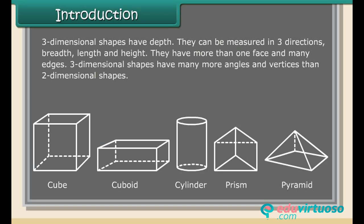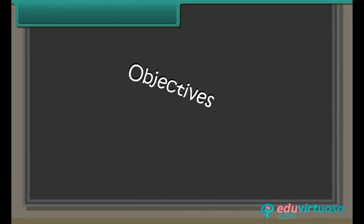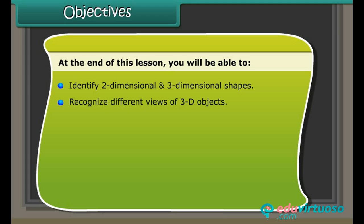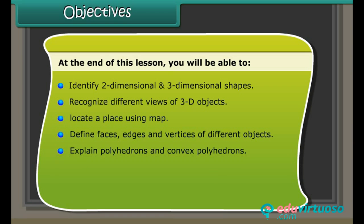Objectives: At the end of this lesson, you'll be able to identify two-dimensional and three-dimensional shapes, recognize different views of 3D objects, locate a place using a map, define faces, edges, and vertices of different objects, explain polyhedron and convex polyhedrons, describe prisms, discuss pyramids, and apply Euler's formula.